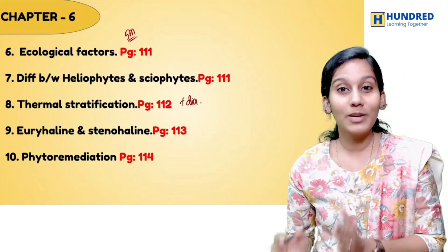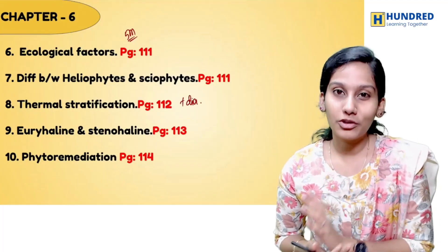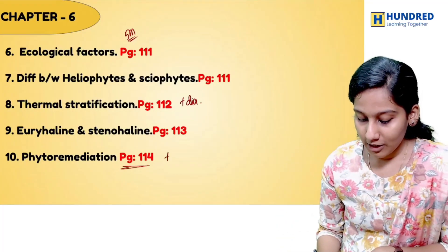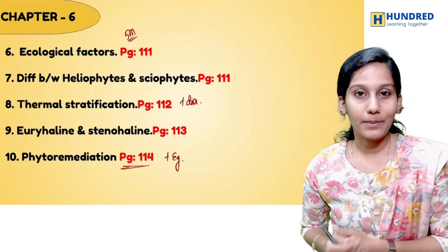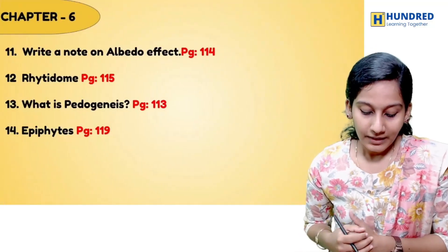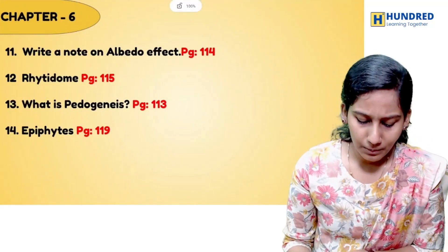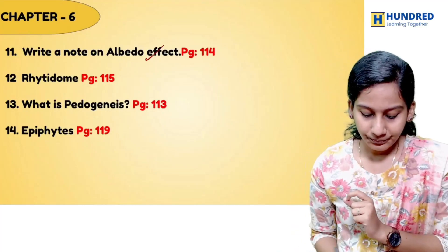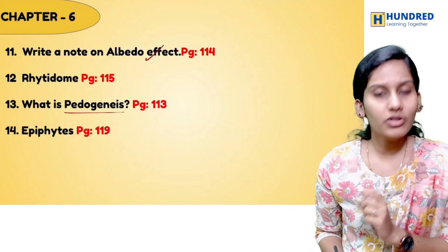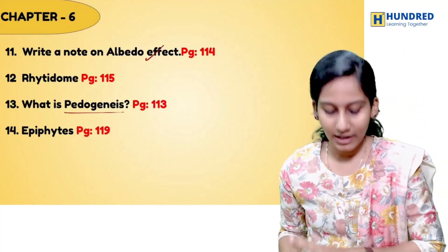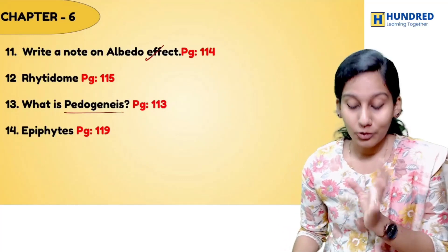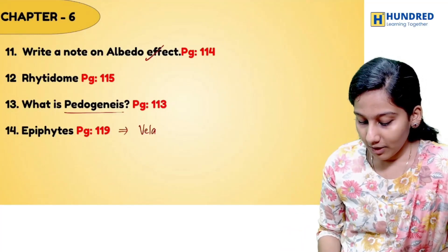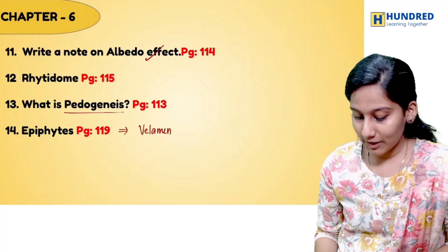Phytoremediation is important. We covered the principles and pros of biotech, but this is very important — don't forget to add the samples. Albedo effect is super important, so we may ask 3 marks on it. Write it down. Pedogenesis — just one line. And Epiphyte — you need to know about the content related to velament tissue.